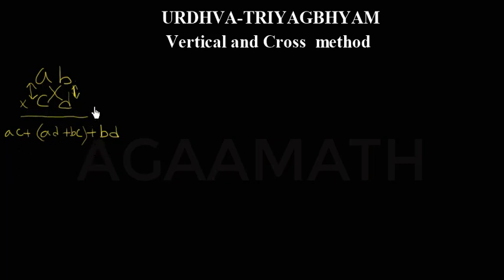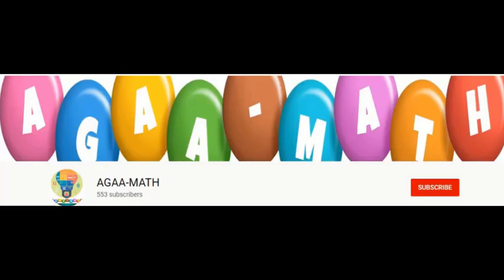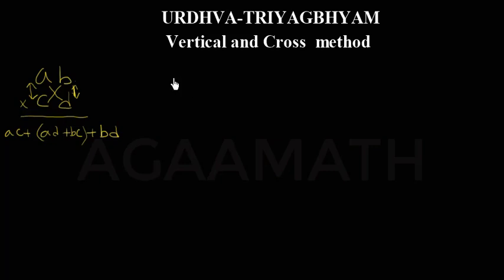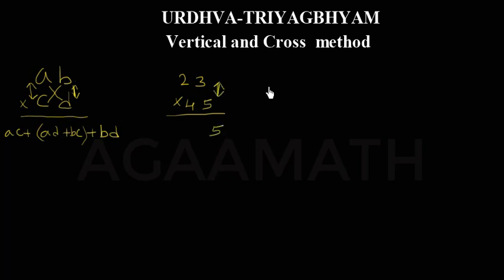So this is the two-digit method when we have two different two-digit numbers. Before you watch the video, please subscribe and click on the bell icon for more notifications. Now let us take an example: 23 into 45. First, we do 3 into 5, which is 15. So write 5 and carry 1.